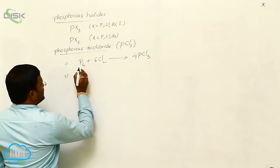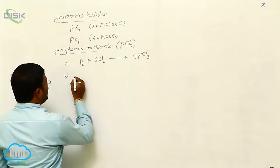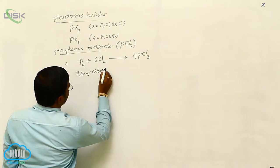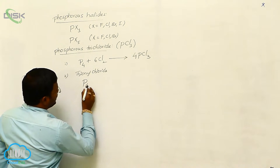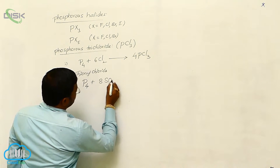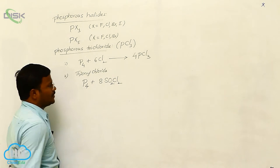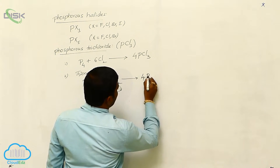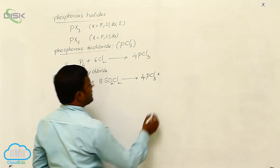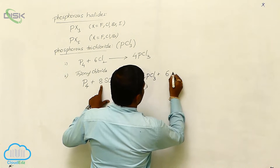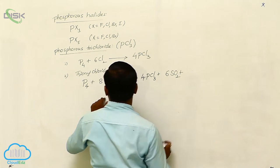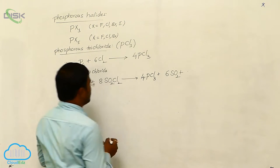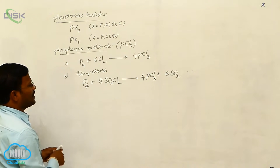In the second method, white phosphorus reacts with thionyl chloride, SOCl2. The reaction produces 4 PCl3 phosphorus trichloride molecules plus 6 SO2 and 2 S2Cl2. This is the preparation of phosphorus trichloride.